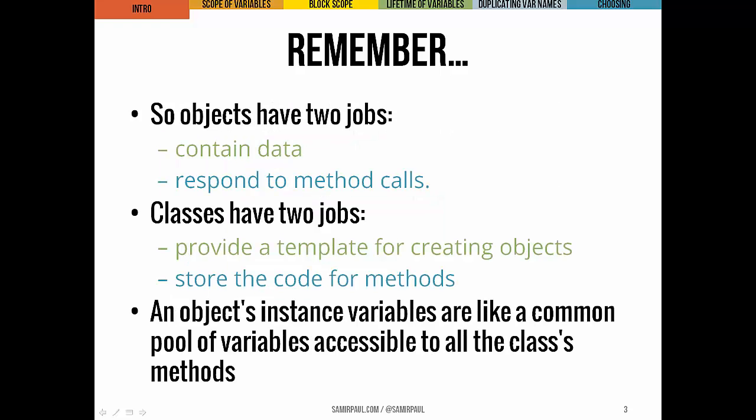Objects really have two jobs. They contain data, or their own instance variables, and they respond to method calls by invoking the code from the class. Classes have two jobs as well — they provide a template or blueprint for creating a particular type of object, and they store the code for the methods.